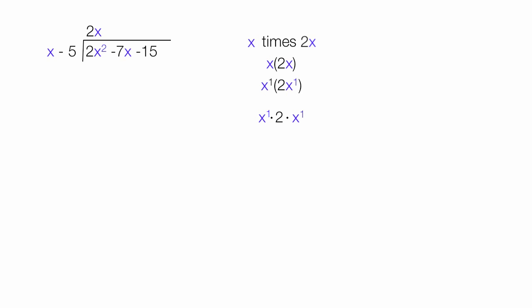I'm using that little dot to indicate multiplication. I'm going to multiply x to the first times x to the first. So I add exponents, which is 1 plus 1 equals 2. And this equals 2x squared, which is that 2x squared.